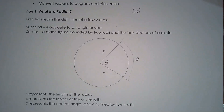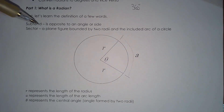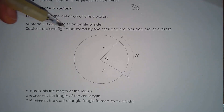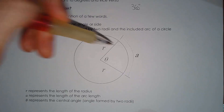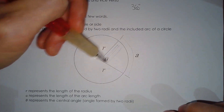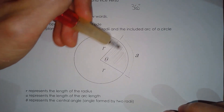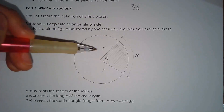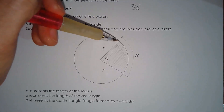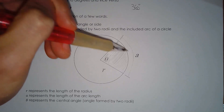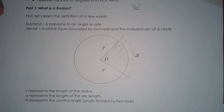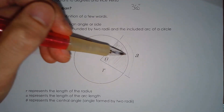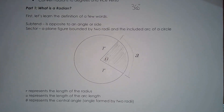So what is a radian? Before we talk about radians, we're going to study this picture. We have some fancy math words: the word 'subtend,' which means opposite to an angle or a side. A sector is a plane figure bounded by two radii and the included arc of a circle — you can think of it as a slice of pizza. Here, R is the radius of the circle, theta is the central angle, and A is the arc length. We have three things: the radius, the central angle, and the arc length.